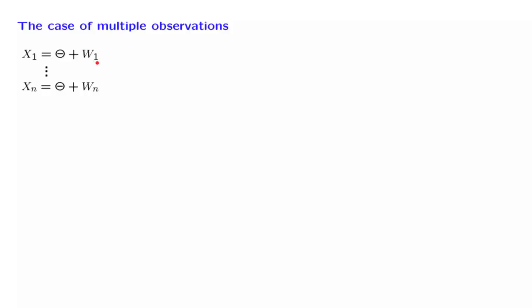Each one of those observations is equal to the unknown random variable plus some additive noise. This is a model that appears quite often in practice. We can only observe values of that quantity in the presence of noise, so we want to measure it multiple times and combine all the observations together to come up with a good estimate of that parameter.